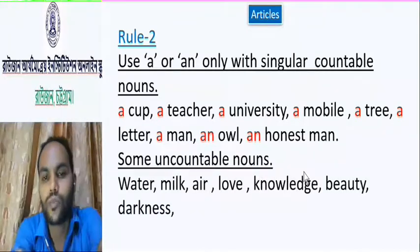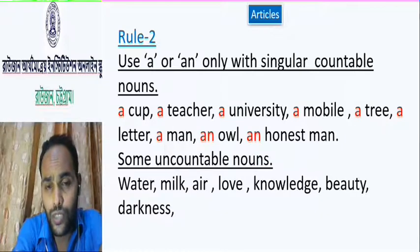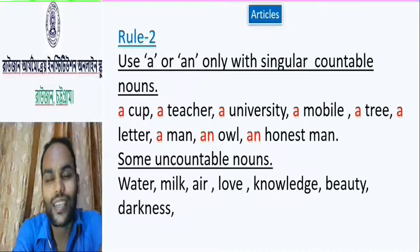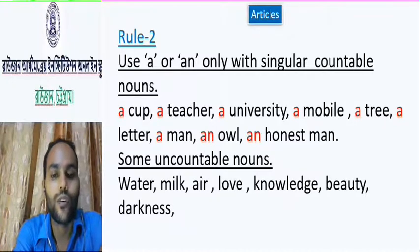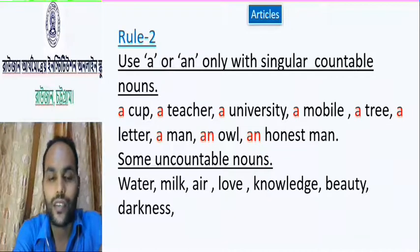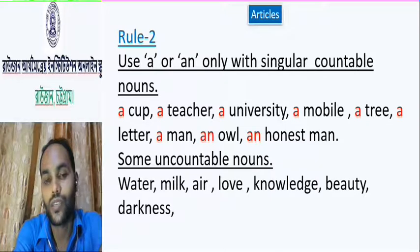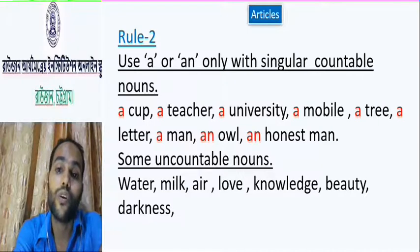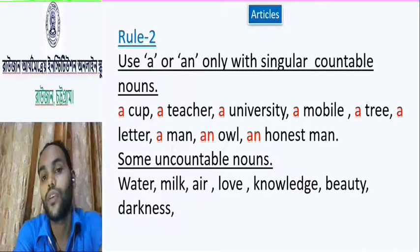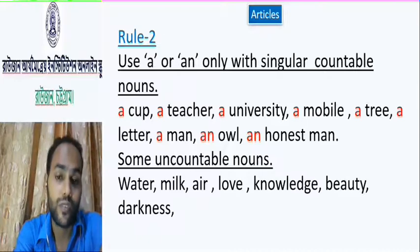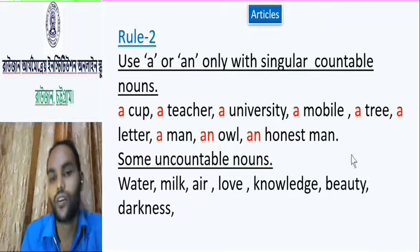Some uncountable nouns — we will not put articles before uncountable nouns. Water — we cannot count it: one water, two water, three water. One milk, one lab, two lab, three lab. So we cannot use articles before uncountable nouns, because we will only use articles before singular countable nouns. I think you got it.